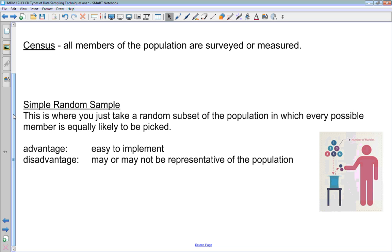So what is the advantage of doing this? It's pretty easy to implement. You're just pulling random numbers out of a hat or generating them in some way. The disadvantage is it may or may not be representative of the population, and that's the big thing. You don't really know whether it represents your population or not. It might, it might not. You're just pulling these things out randomly.